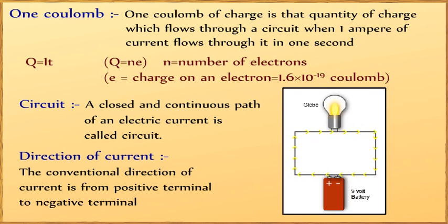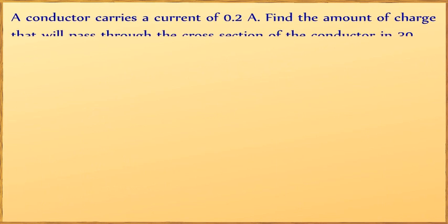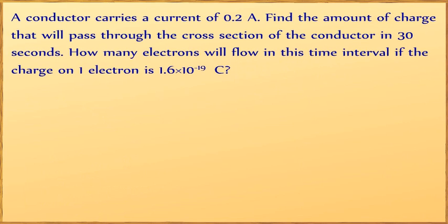Let us try to solve some numerical problems. A conductor carries a current of 0.2 ampere. Find the amount of charge that will pass through the cross section of the conductor in 30 seconds. How many electrons will flow in this time interval if the charge on one electron is 1.6 × 10^-19 coulomb?